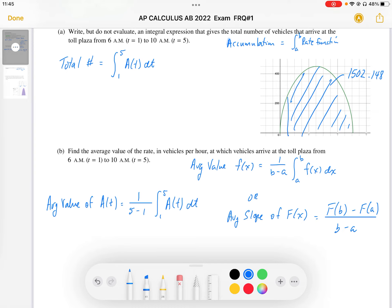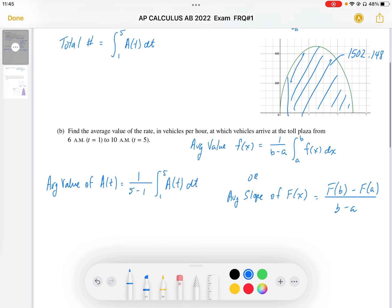That represents the total number of cars. So this is going to be equal to 1 over 4, and this area is going to be 1,502.148 cars.